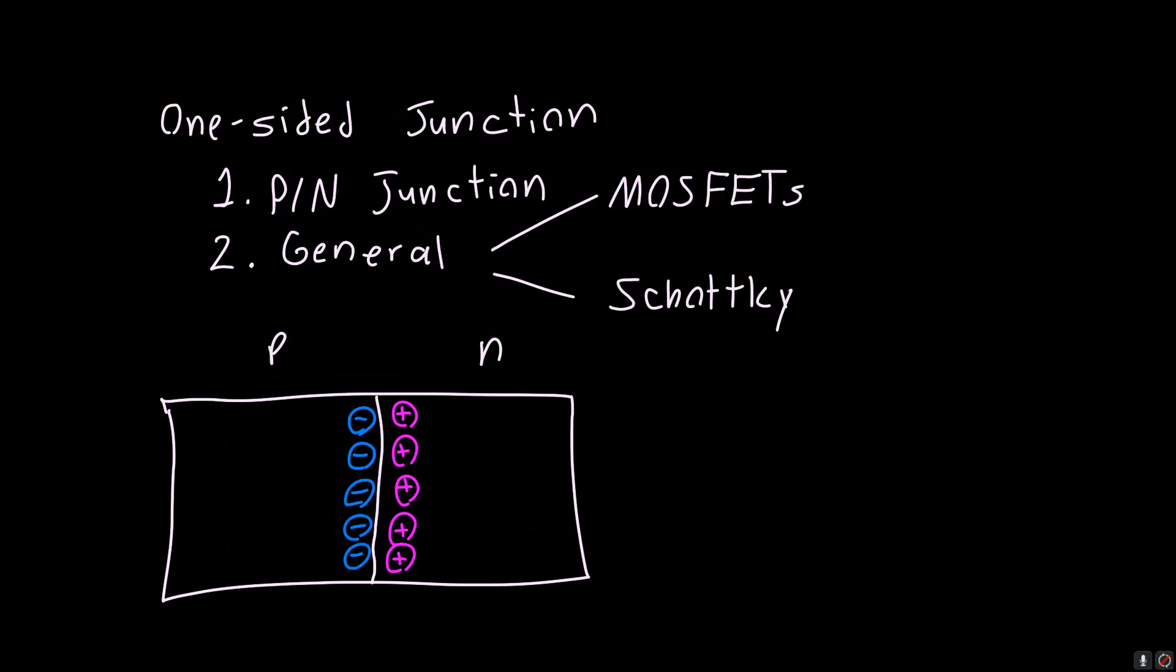We know that this depletion region is going to have a certain width. It's going to have a width on the P side which we called XP, and a width on the N side which we called XN. In general, these widths are going to be functions of the doping.